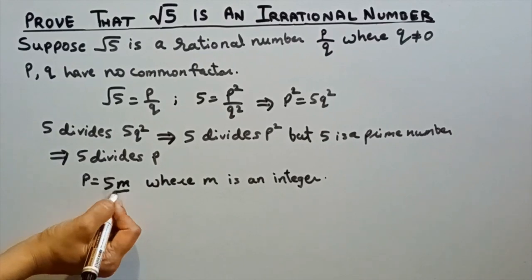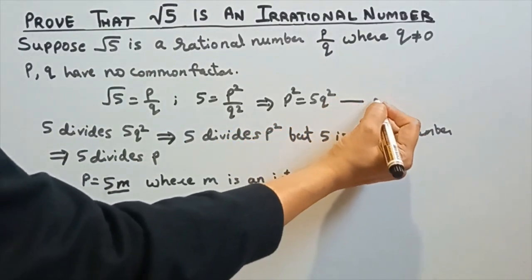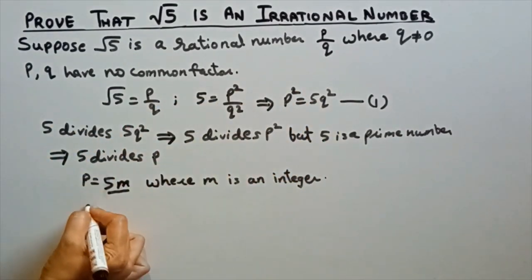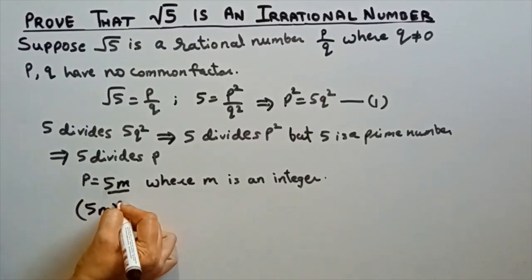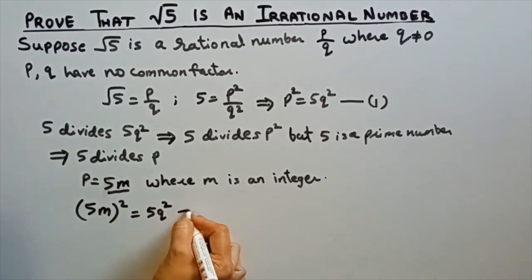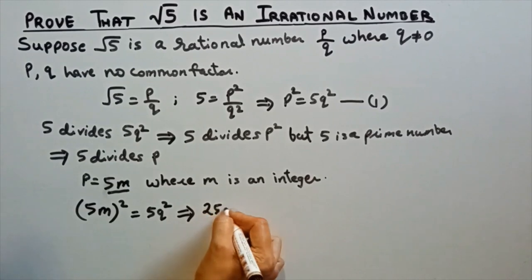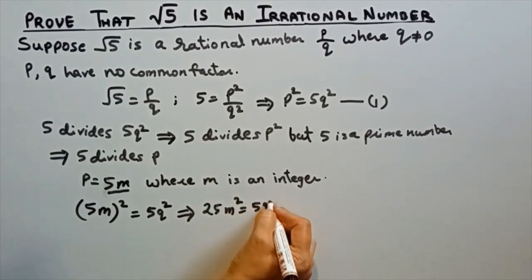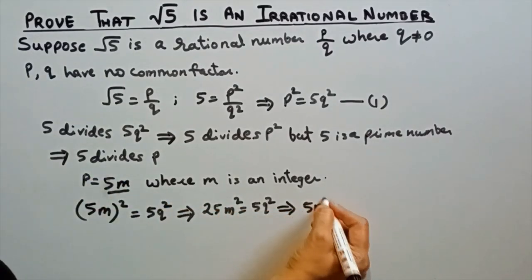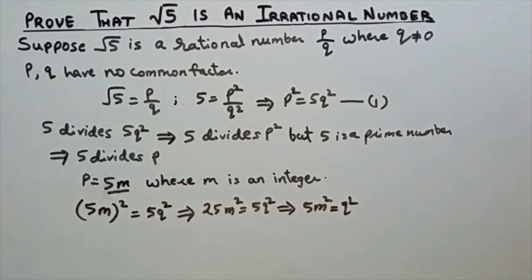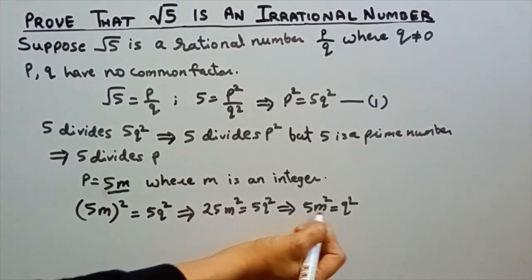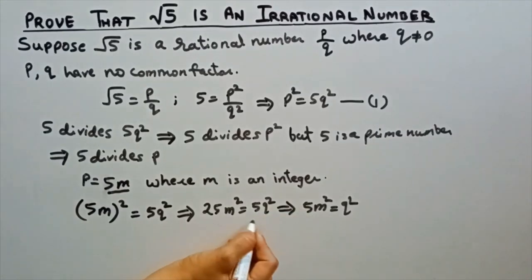Now we'll substitute 5m into the first equation. Substituting p = 5m, it becomes (5m) squared is equal to 5q squared. This implies 25m squared is equal to 5q squared. Cancelling the common factor of 5, it becomes 5m squared is equal to q squared.